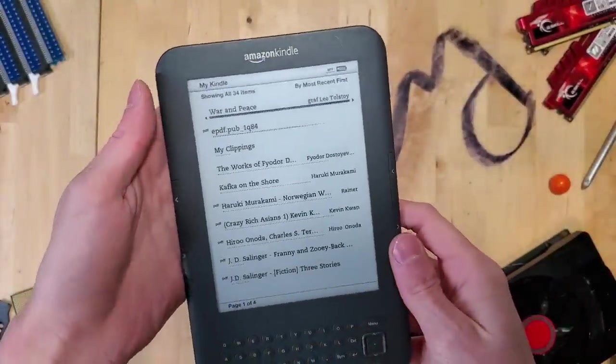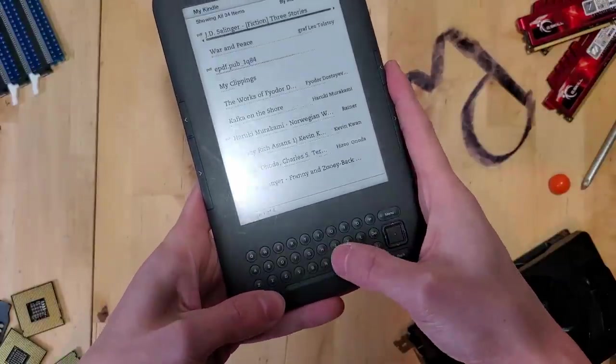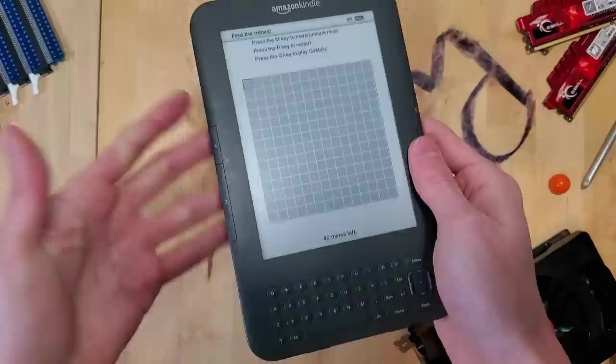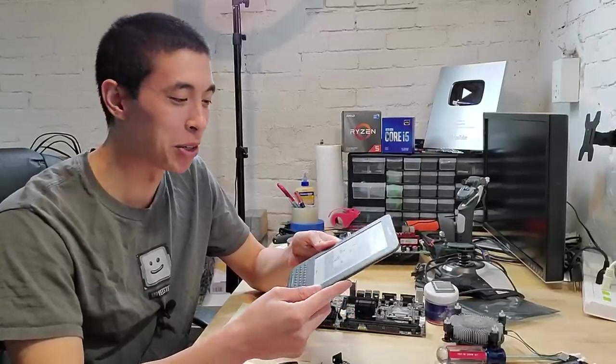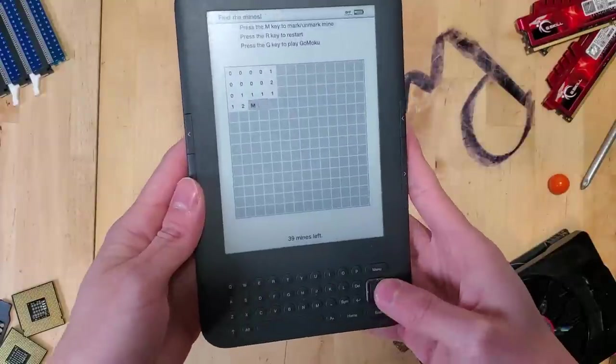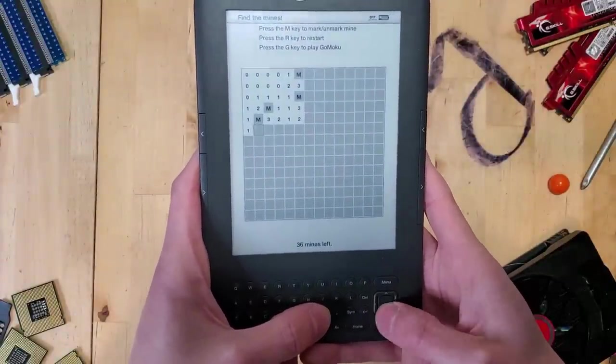Now, one of the selling points of these Kindles is distractionless reading. However, if you were to go to the main menu and hold Shift, Alt, and M all at the same time, a game of Minesweeper appears. That's right, this same game that you probably played on your family computer is also accessible on a reading tablet. On the Kindle, you can uncover squares as well as flag minds, just like the real thing.